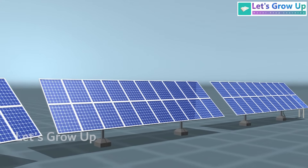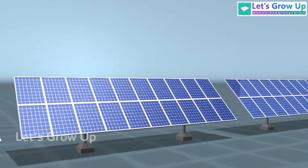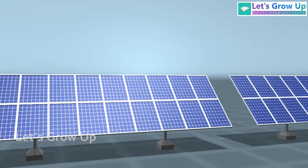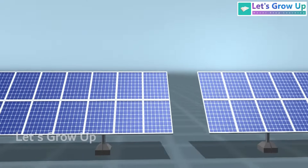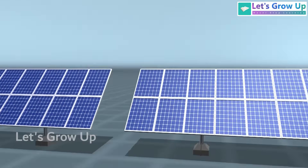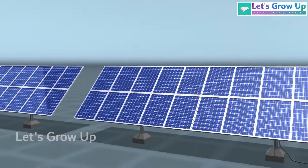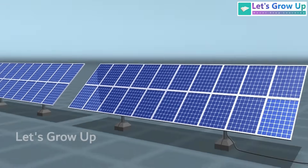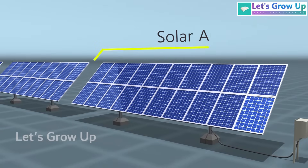Now let's take a look at the structure of a single solar array. In larger solar arrays, multiple strings of solar panels are connected in parallel.